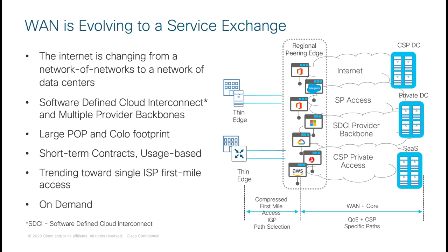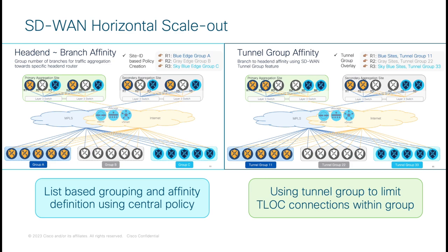We see the WAN evolving to a service exchange instead of the traditional models seen in the past. With its small footprint and high-density high-speed interfaces, the C8500 20X6C can adeptly maintain the necessary security and throughput when connecting enterprise networks to a variety of cloud services in today's enterprise workflows and co-location facilities. In SD-WAN deployments, higher IPSec throughput and higher interface density gives additional flexibility and reduces the amount of horizontal scaling necessary for larger networks with thousands of remote locations.